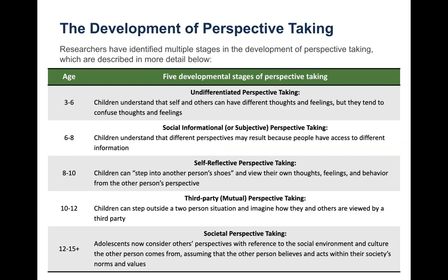Researchers have identified multiple stages in the development of perspective taking. There are five developmental stages. Ages three to six: undifferentiated perspective taking. Ages six to eight: social-informational or subjective perspective taking. Then self-reflective perspective taking. Then third-party perspective taking. I'll leave this slide up for about 30 seconds so you have time to read through these grade levels and think about the grades you're connected to specifically. If you're facilitating, feel free to pause that slide if folks need more time.